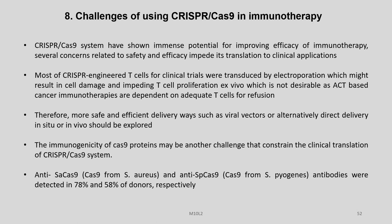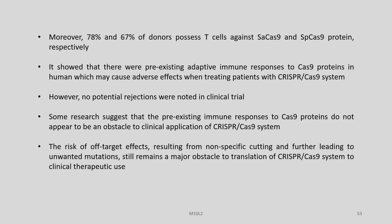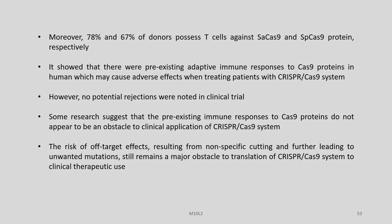The immunogenicity of Cas9 proteins may be another challenge that constrains the clinical translation of CRISPR-Cas9 system. Anti-SaCas9 from S. aureus and anti-SpCas9 from S. pyogenes antibodies were detected in 78% and 58% of donors respectively. Moreover, 78% and 67% of donors possessed T-cells against SaCas9 and SpCas9 proteins respectively, showing pre-existing adaptive immune responses to Cas9 proteins in humans. However, no potential rejections were noted in clinical trials, and some research suggests these pre-existing immune responses do not appear to be an obstacle to clinical application.